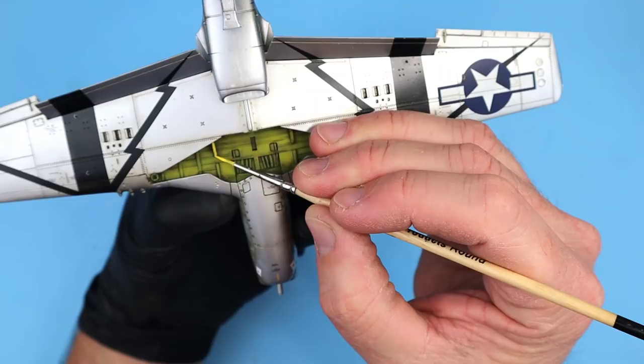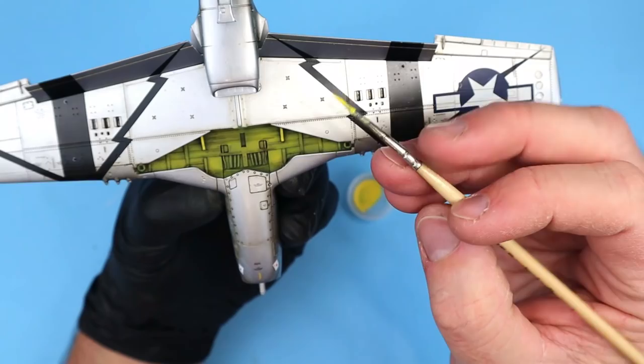To add a little more detail to the wheel bays I apply a little Vallejo yellow to the individual wing ribs and other components.